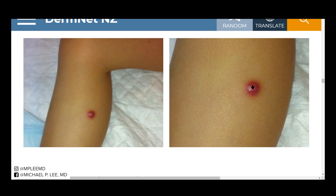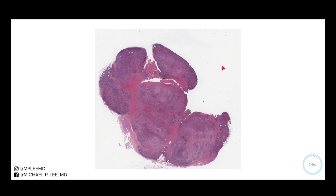Microscopically, you can see that most of these tumors are within the subcutis, but occasionally you can have primary dermal lesions. From a low-power perspective, the main thing I like to use to make the diagnosis is this kind of bluish color and a sort of pale or pink color in between. All these areas here are fibrotic zones. So you have a multinodular pattern microscopically, with blue and then kind of pale pink in color.